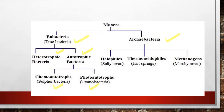Heterotrophic bacteria is classified under the mode of nutrition. For example, chemo autotrophs and photo autotrophs. When bacteria can synthesize their food using certain chemical substances, you call them chemo autotrophs — sulfur bacteria belongs to this group. Photo autotrophs are bacteria which can synthesize their own food in the presence of light. Example: blue-green algae or cyanobacteria.